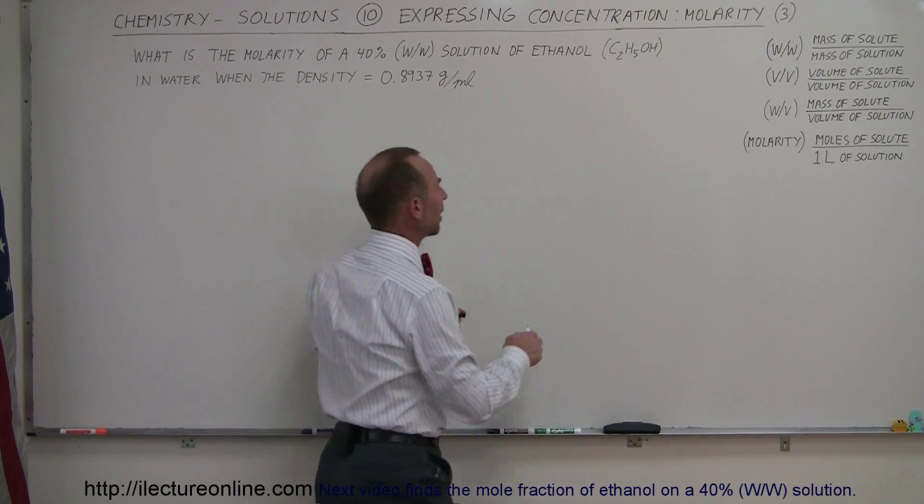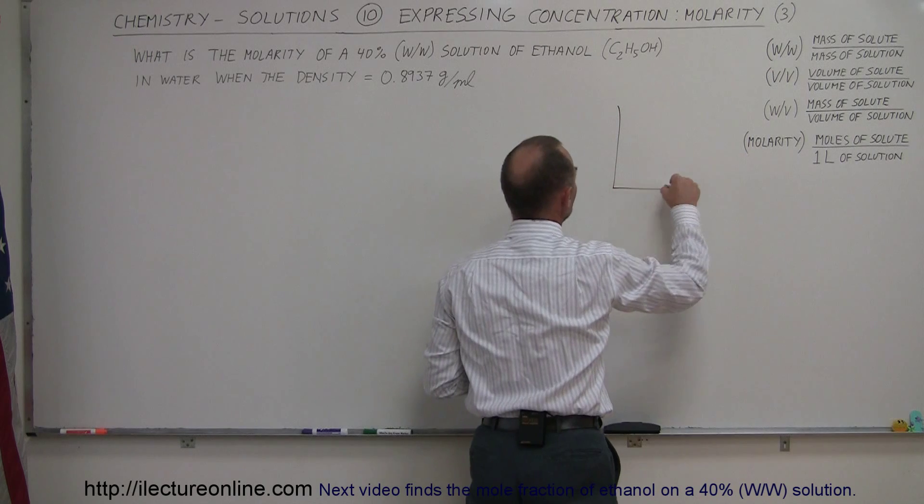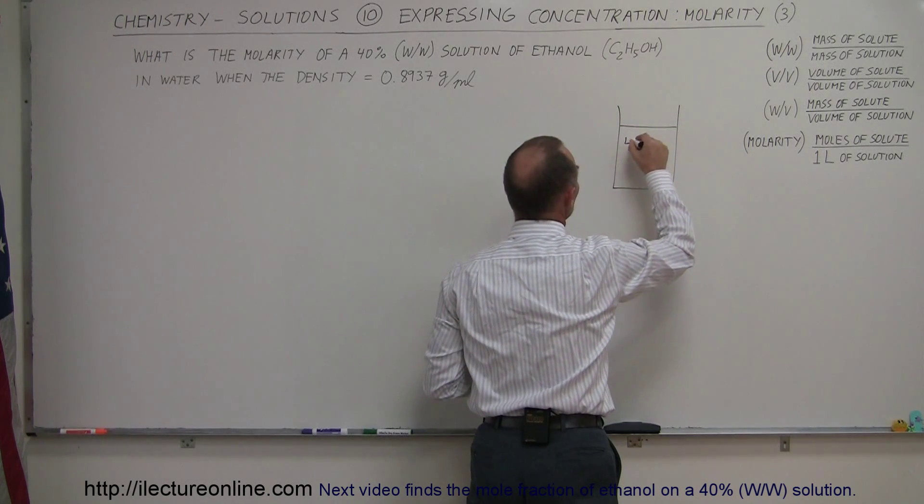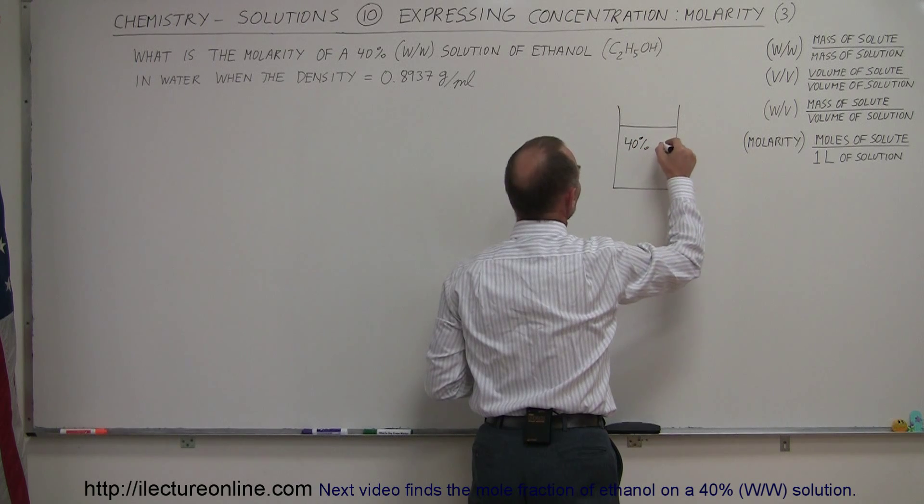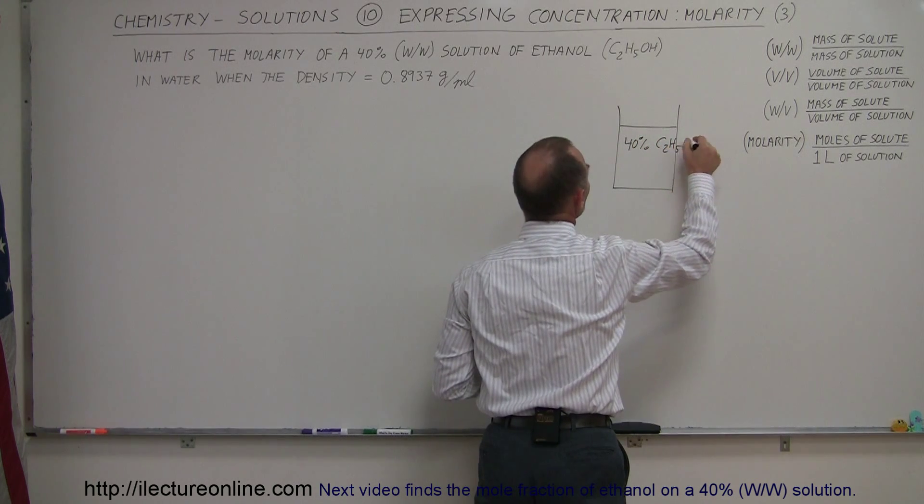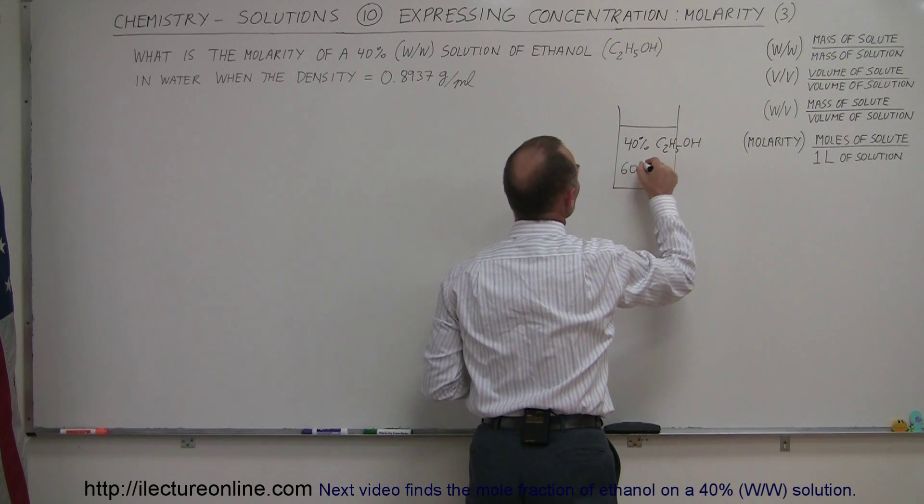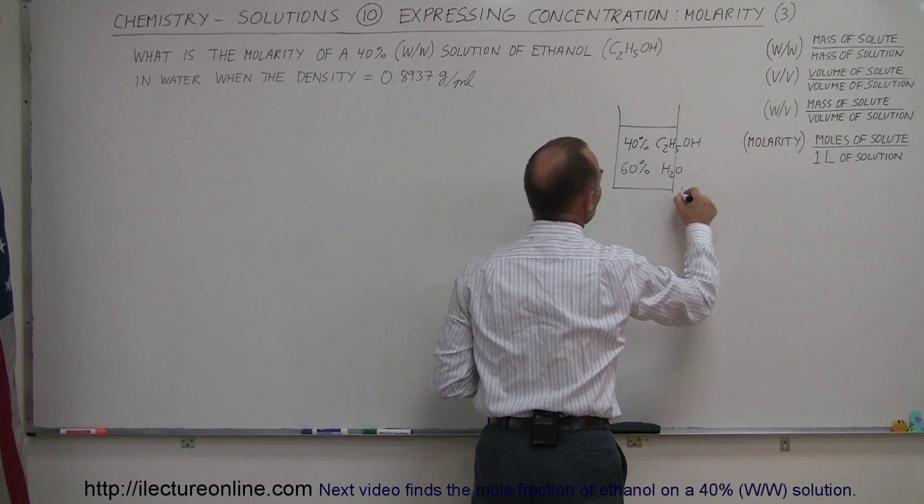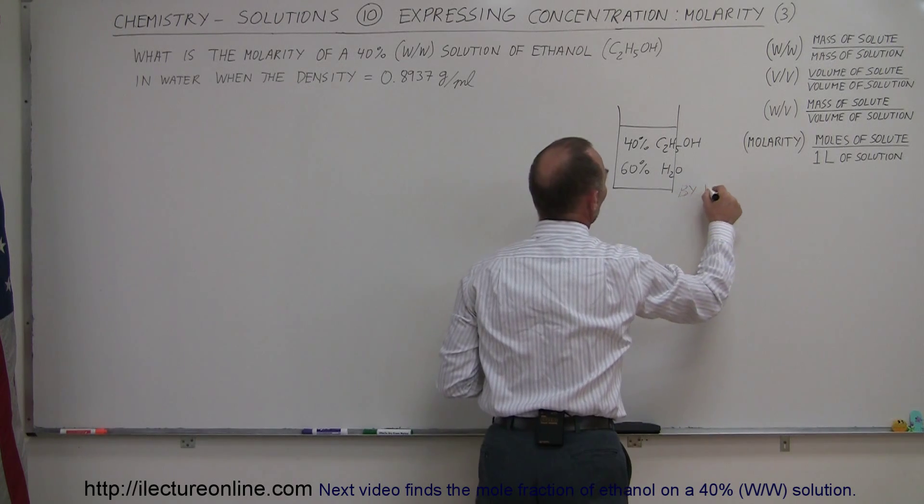Well that's 40%. So let's say that we have a solution and some of it is ethanol, so we have 40% is ethanol, that's C2H5OH, and that means the other 60% would be water, and that is by mass or by weight.